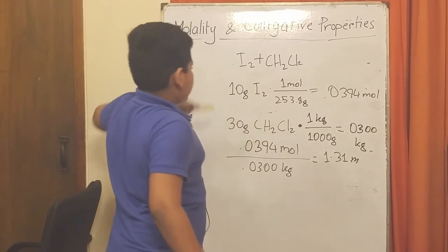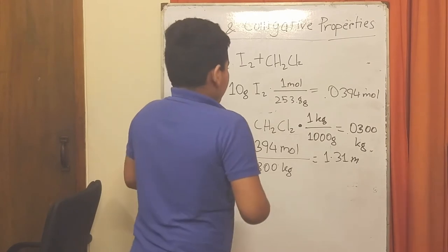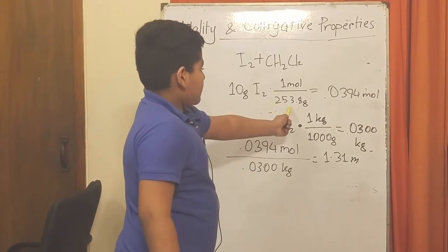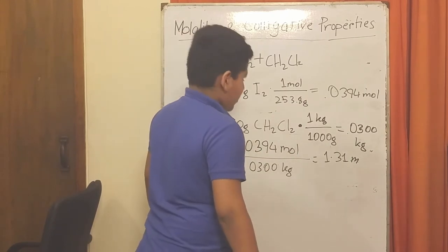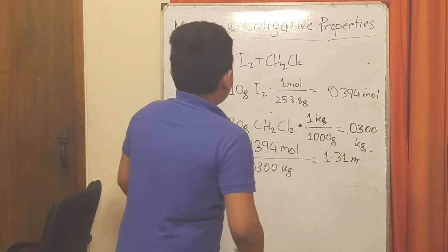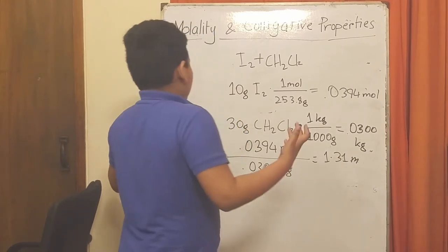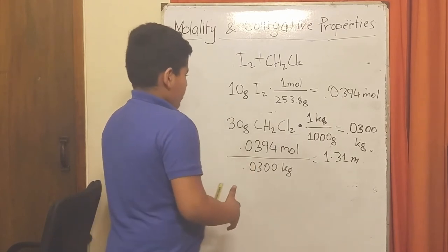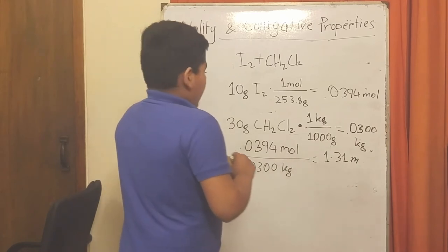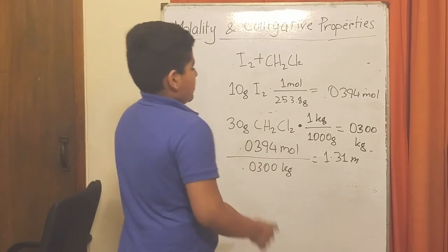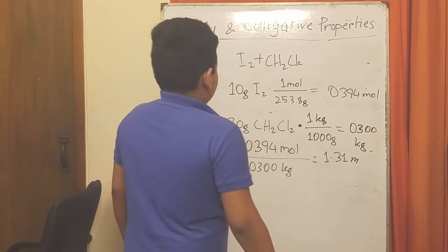To review: we multiply by one mole over 253.8 grams because that's the molar mass, and we get 0.0394 moles. If we convert to kilograms, 30 grams of dichloromethane times one kilogram over 1000 grams equals 0.0300 kilograms.